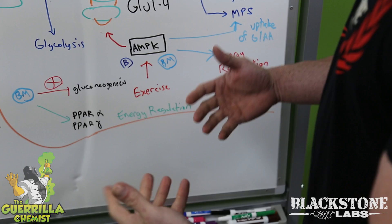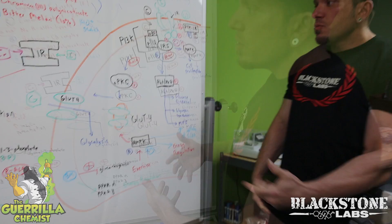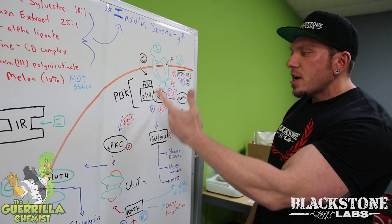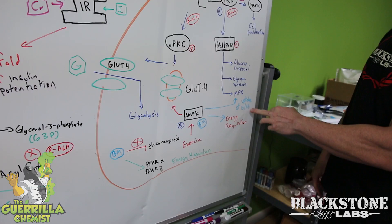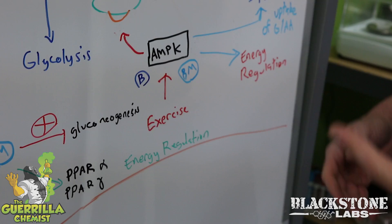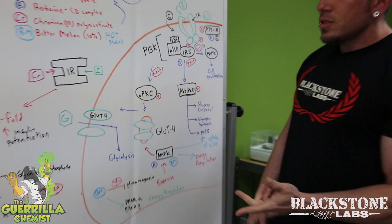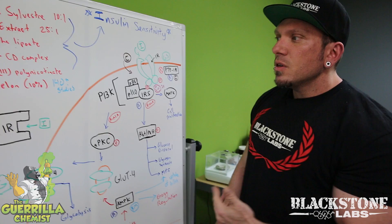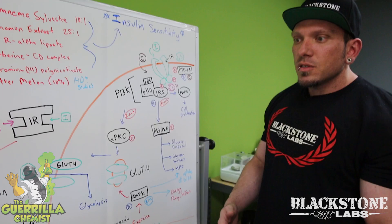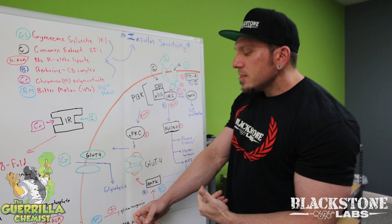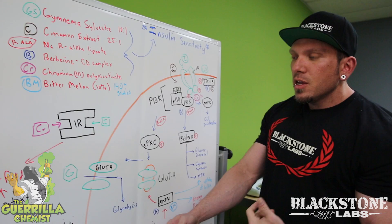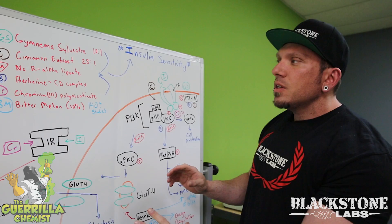So besides bitter melon increasing insulin secretion and activating both the PI3K and AKT pathways, as well as AMPK for increased uptake of glucose and amino acids, it also blocks the enzymes responsible for gluconeogenesis. Your body will break down muscle tissue when blood sugar gets too low in an effort to keep glucose available for brain function. Bitter melon blocks two of those enzymes toward the end of that process, preventing gluconeogenesis and reducing muscle breakdown — which is exactly what we want when partitioning nutrients to our muscles.